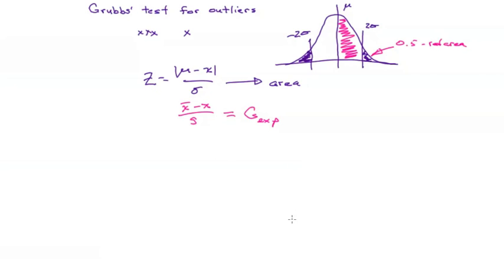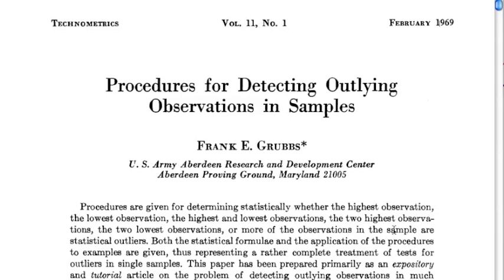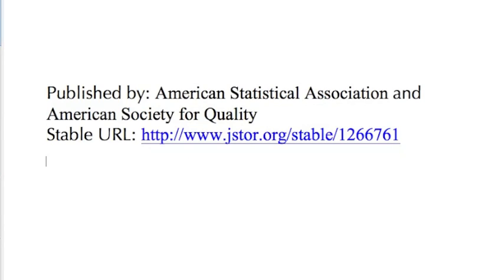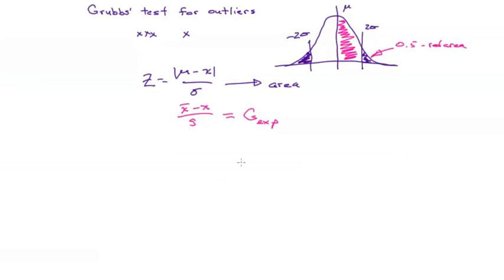Just what that value would be has been worked out for us some time ago by Frank Grubbs in a paper back in 1969. This paper is available to you online at the American Statistical Association. So what we're going to do is look at this experimental value of g and compare it to Grubbs' table.